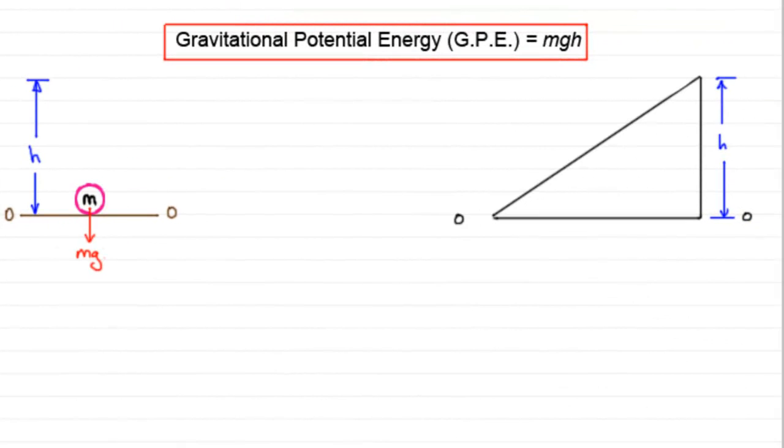Hi. Now, you may have come across different types of energy in the past, say heat, light, sound for example. But in mechanics, we also have different types of energy, and one such form of energy is gravitational potential energy, or GPE for short.